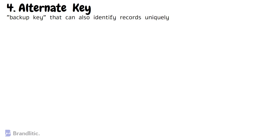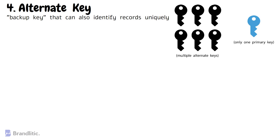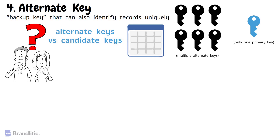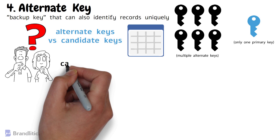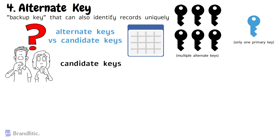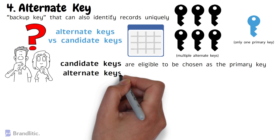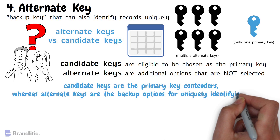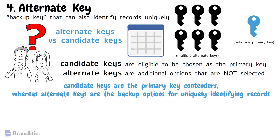Next: what is an alternate key? It is like a backup key that can also identify records uniquely in a table, apart from the primary key. However, unlike the primary key, there can be multiple alternate keys in a table. Both alternate keys and candidate keys are columns or set of columns that can uniquely identify each record in a table, but there is a slight difference between them. Candidate keys are the columns eligible to be chosen as the primary key, while alternate keys are the additional options that can uniquely identify records but are not selected as the primary key. To state simply, candidate keys are the primary key contenders, whereas alternate keys are the backup options for uniquely identifying records.